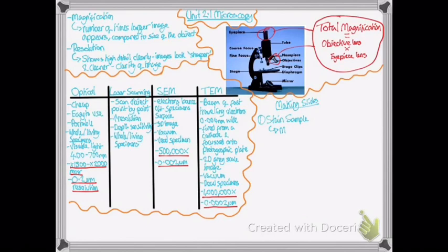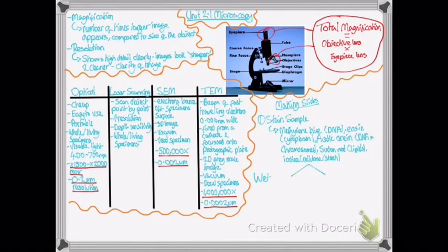But we're going to look at staining and how we can use staining to help us see different parts of the organism. So you stain the sample either using methylene blue, which shows DNA, eosin, which shows cytoplasm. You can use acetic orcein, which shows DNA in navy and chromosomes in red. Sudan red, which puts lipids in red. Iodine, as you probably recognize from the biological molecules test, can help find starch and also show cellulose in a yellow-brown color.